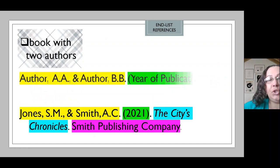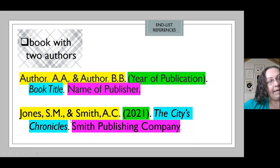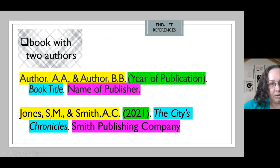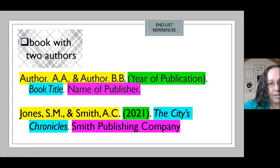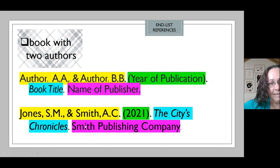Let's see what happens when we have two authors. We will enter both authors and then the rest of the information is going to stay the same. First author's last name, comma, space, first initial, period, middle initial, period, comma, space. Then the second author's information. Open parenthesis, year of publication, close parenthesis, period, space. Place the title of the book italicized and in title case, period, space, name of the publisher, period.